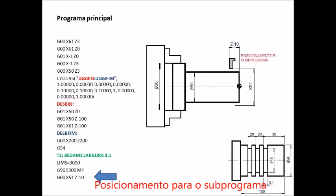O posicionamento para o subprograma é muito importante. A coordenada Z-10 resulta da distância do primeiro canal até a face, que é de 30mm, menos 20. Este 20 é o passo entre os canais, ou a distância entre as repetições. Desta maneira, temos que 30-20 igual a 10. Daí a razão do posicionamento ser em Z-10.